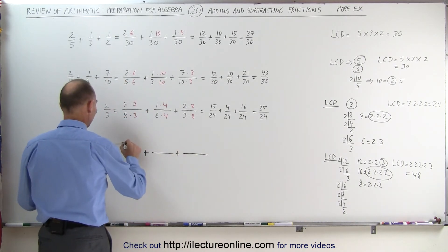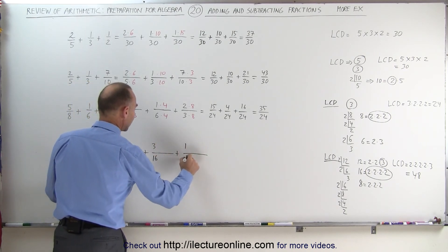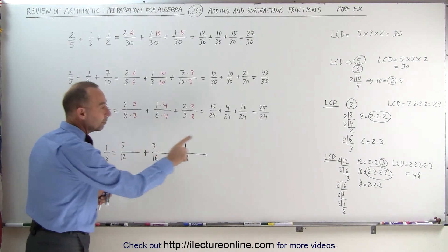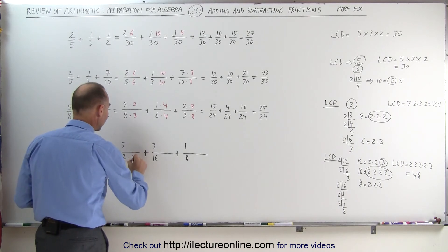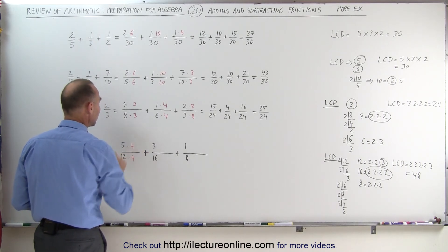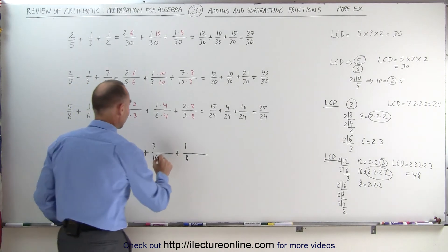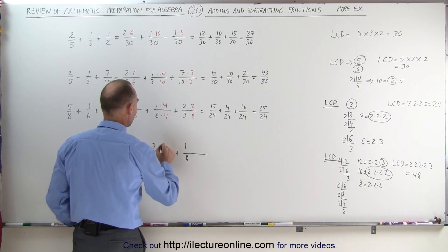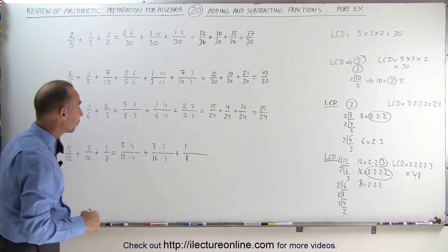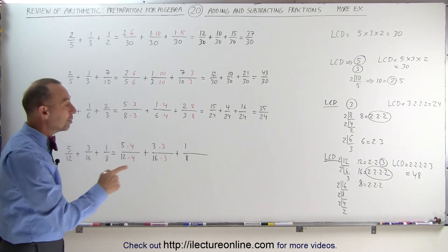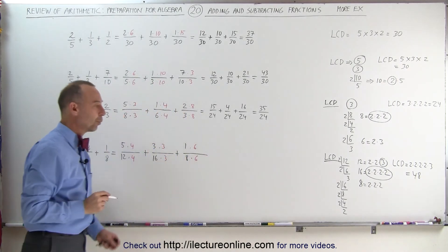I start out with 5 over 12, with 3 over 16, and with 1 over 8. Notice 12 goes into 48 four times — if I multiply 12 by 4 I get 48, which means I must multiply the numerator by 4 as well. 16 goes into 48 three times, so I must multiply the denominator times 3, which means I must multiply the numerator by 3 as well. 8 goes into 48 six times, so I must multiply the denominator times 6, and I must multiply the numerator times 6 as well.